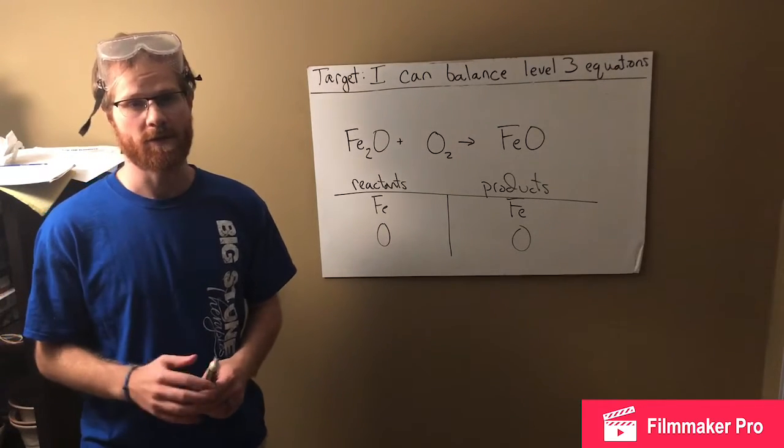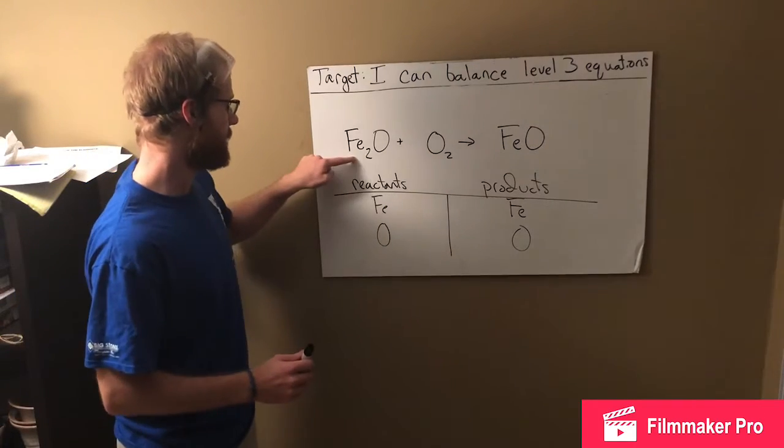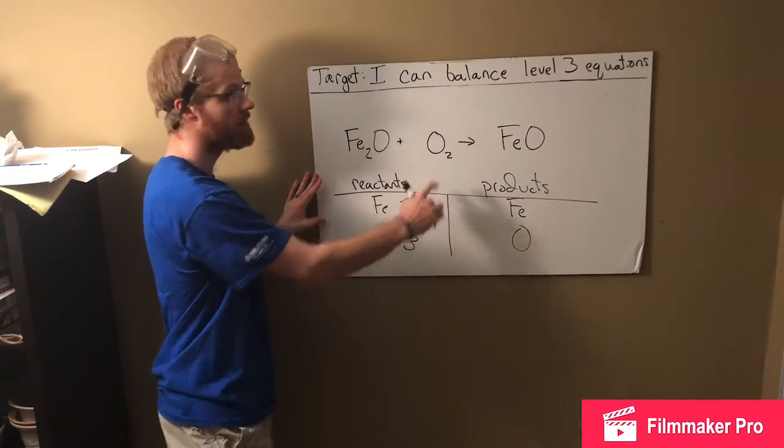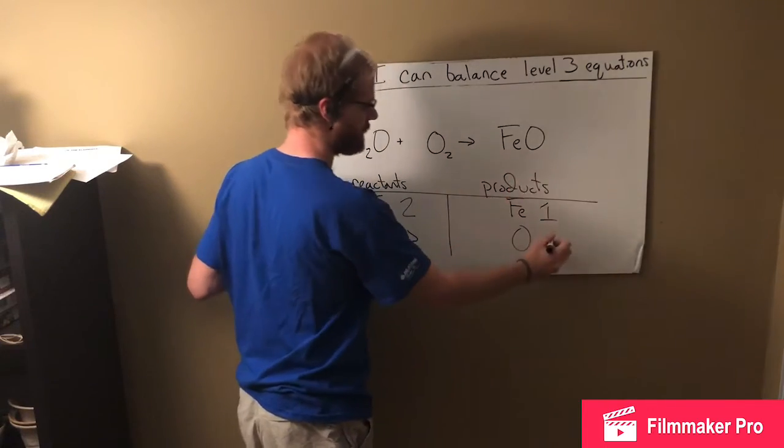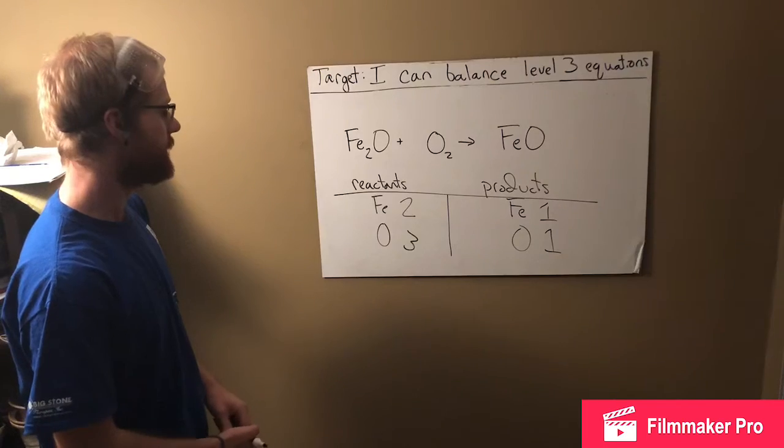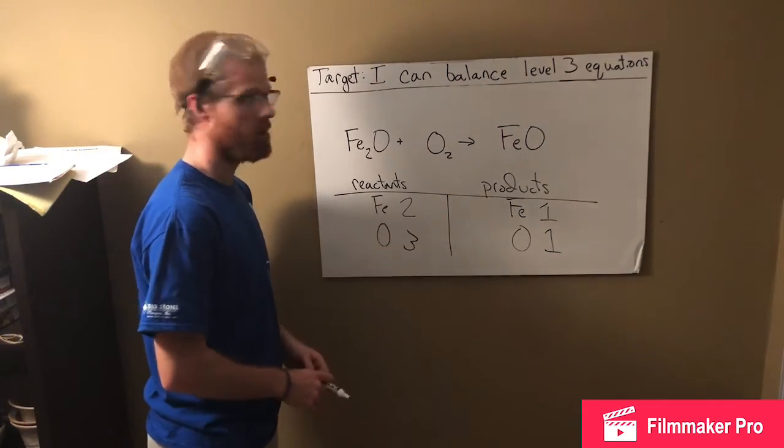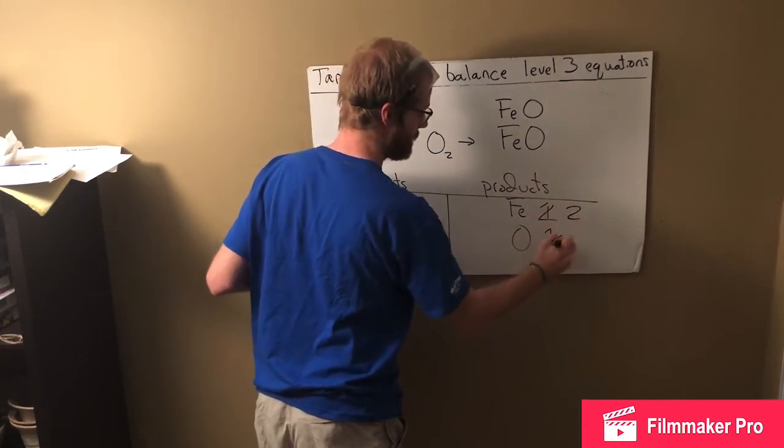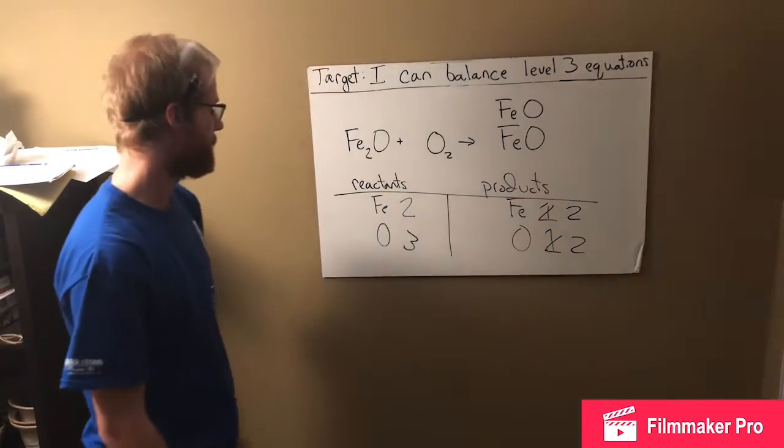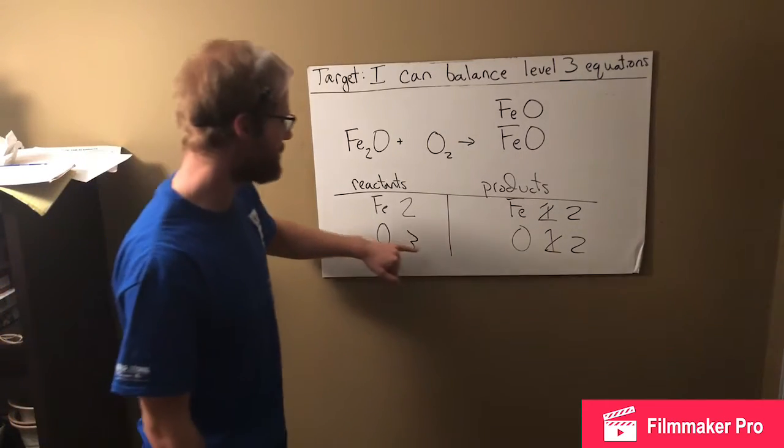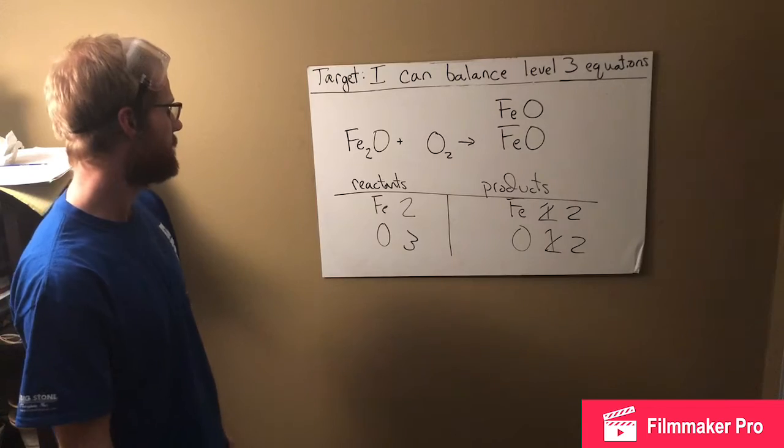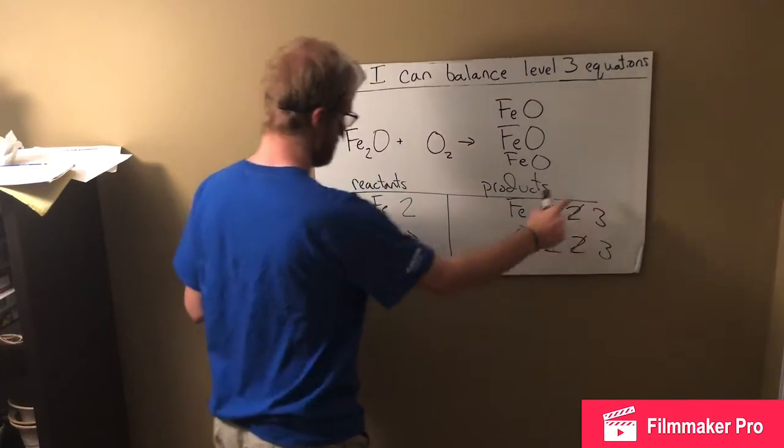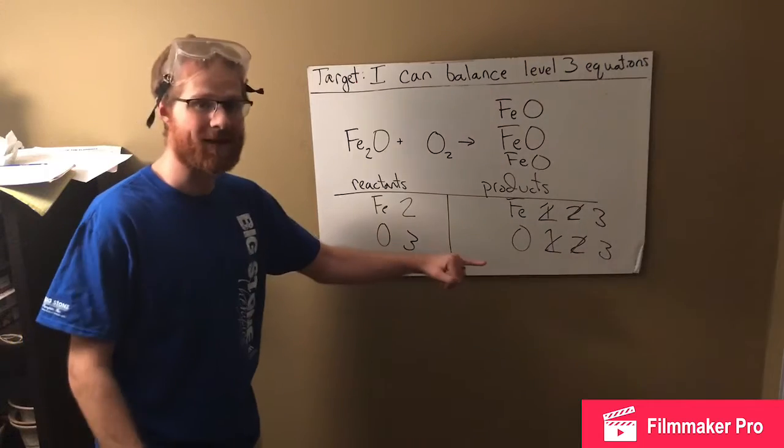All right, now that you've had a chance to try this problem, let's go over it. So we've got two iron on our reactant side and three oxygen on our reactant side. One iron on our product side and one oxygen. Okay, so it looks like we're going to need a little bit more iron on our product side. So I'm going to add more FeO to our product side. Now I've got two iron and two oxygen. Cool.